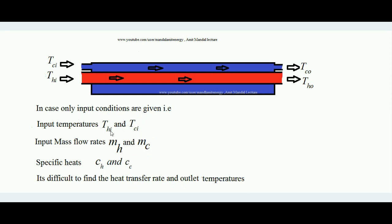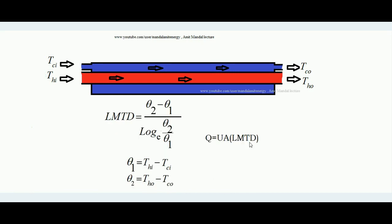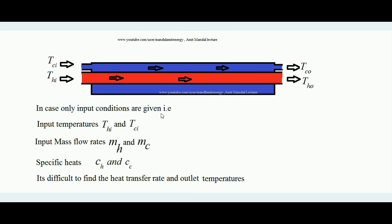Now, if only inlet conditions are given — we know the inlet temperatures of hot and cold fluid, the mass flow rates m_H and m_C, and the specific heats C_H and C_C — but exit conditions are not known, meaning we do not know the exit temperatures of the hot and cold fluid. In that case it is difficult to find the heat transfer rate because we cannot find LMTD without knowing the exit temperatures.